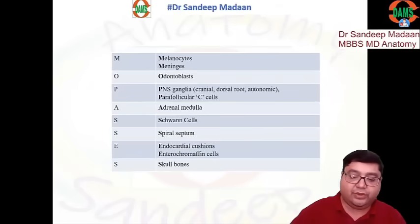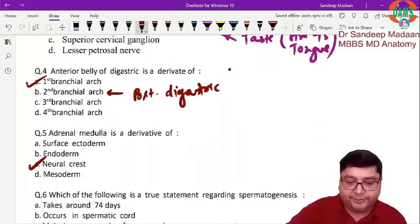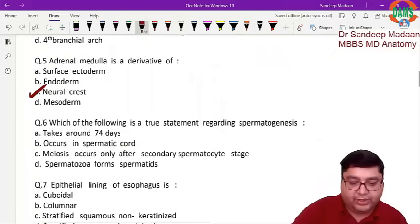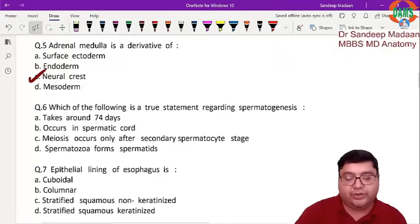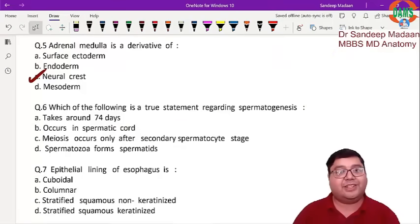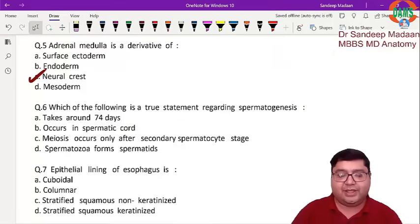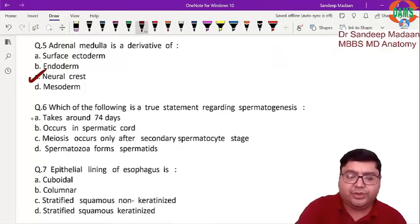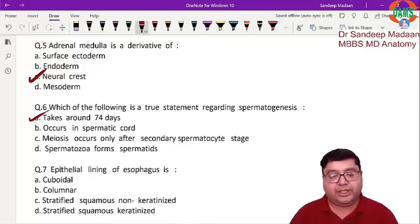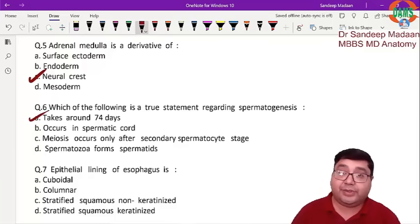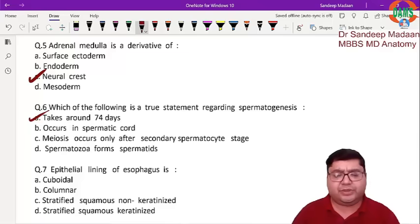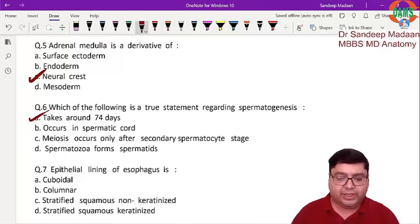Next question: which of the following is the true statement regarding spermatogenesis? This is a straightforward question — the answer is 74 days. If they ask the time required for capacitation, that is 7 hours, but for spermatogenesis it is 74 days.